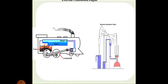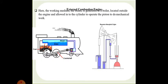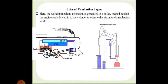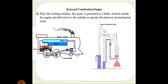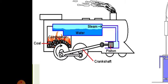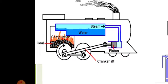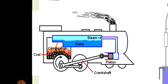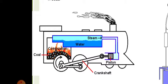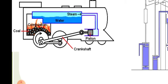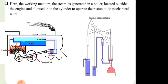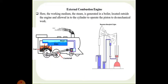In external combustion engines, these engines were very large in size and the working medium was steam. Steam is generated in the boiler located outside the engine and allowed into the cylinder to operate the piston to do mechanical work. You can observe in this figure a train that was running on steam — there is a crankshaft and a piston. Steam is generated by burning coal, and that is used to run the trains. Similarly, the early atmospheric engines were used as external combustion engines.